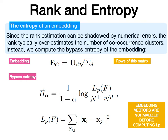To test this hypothesis, we compute the entropy of the embedding, not only the rank, because rank estimation can be shadowed by numerical errors. Instead of using the rank, which typically overestimates the number of co-occurrence clusters, we compute the bypass entropy of the embedding. Each row of the embedding matrix E is the embedding of a node in the graph. We normalize this row and compute the bypass entropy: we construct the k-nearest-neighbor graph of all points in the embedding and measure the so-called Rényi entropy, which is given by this expression using alpha equal to 0.99, where L is the cost of this k-NN graph.